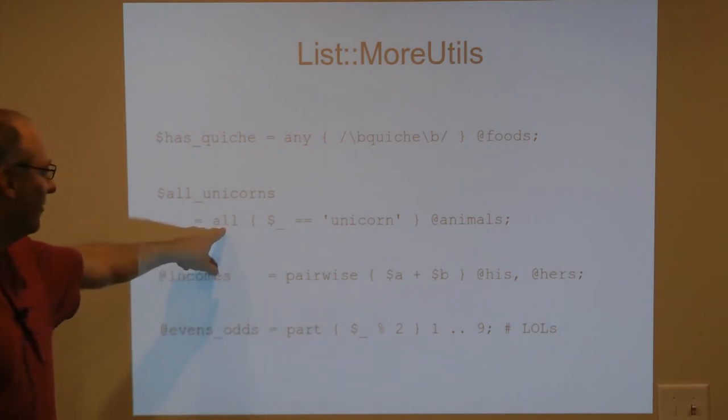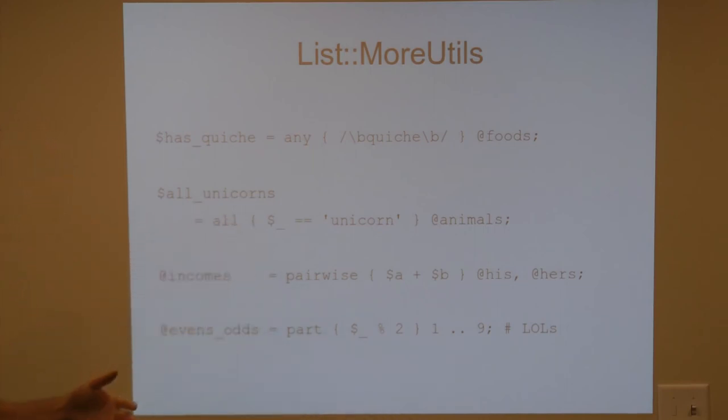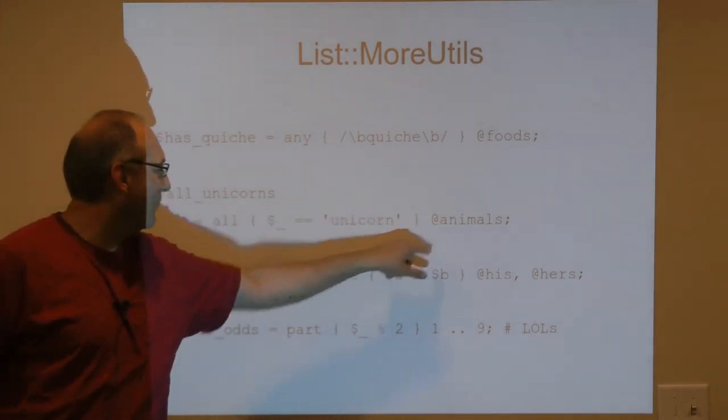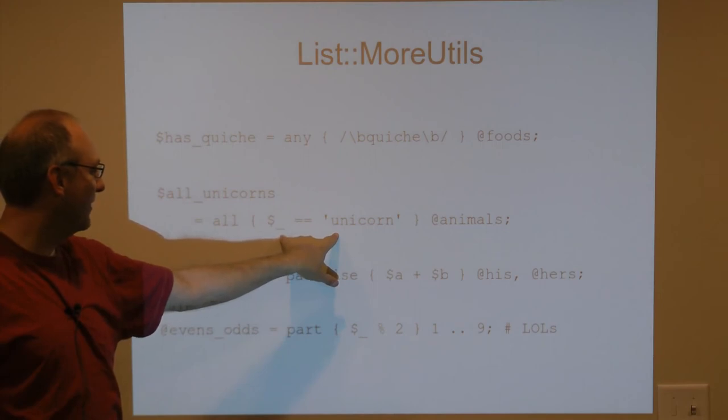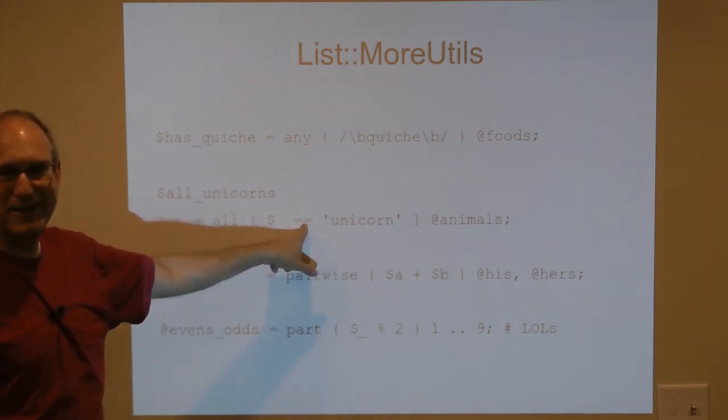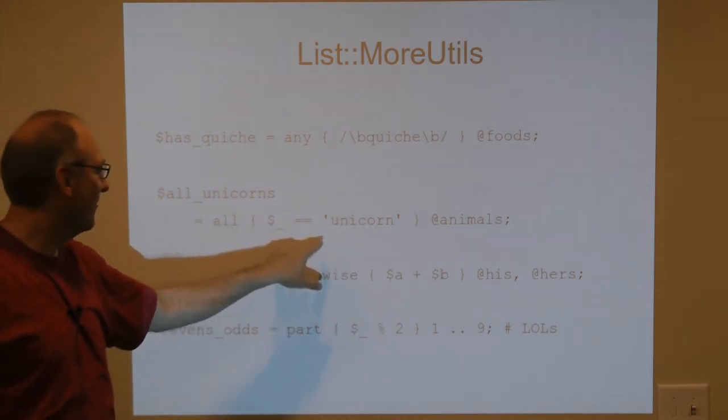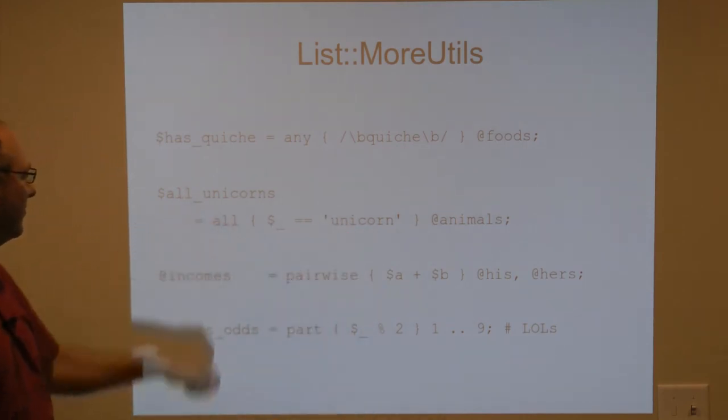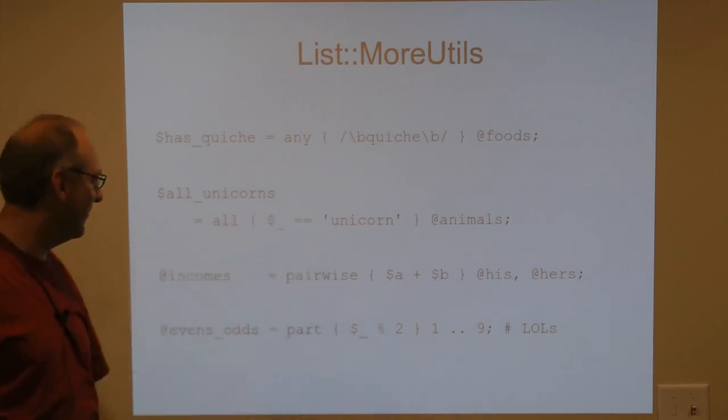There's also all, which checks to see. This one has to run through the entire list. And it's going to check to see if every single one of the elements in animals matches this Boolean. That shouldn't be an equals equals. That should be an EQ. So if all of the variables are unicorns, then it's all unicorns and it returns a positive. Except in this case where we have a typo.